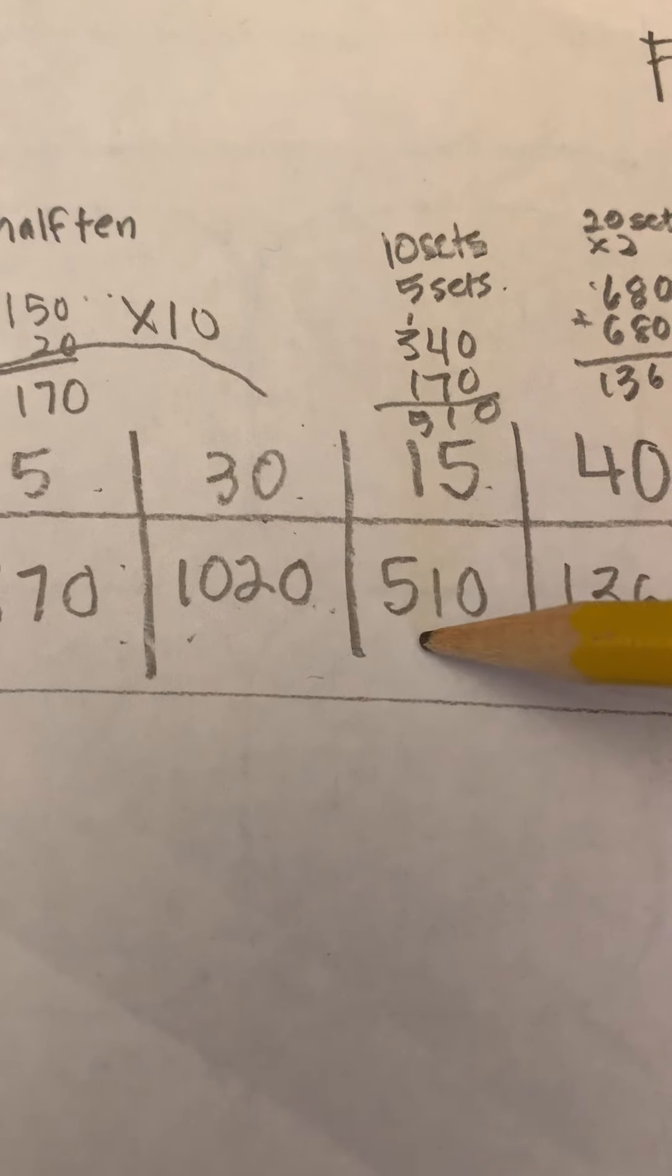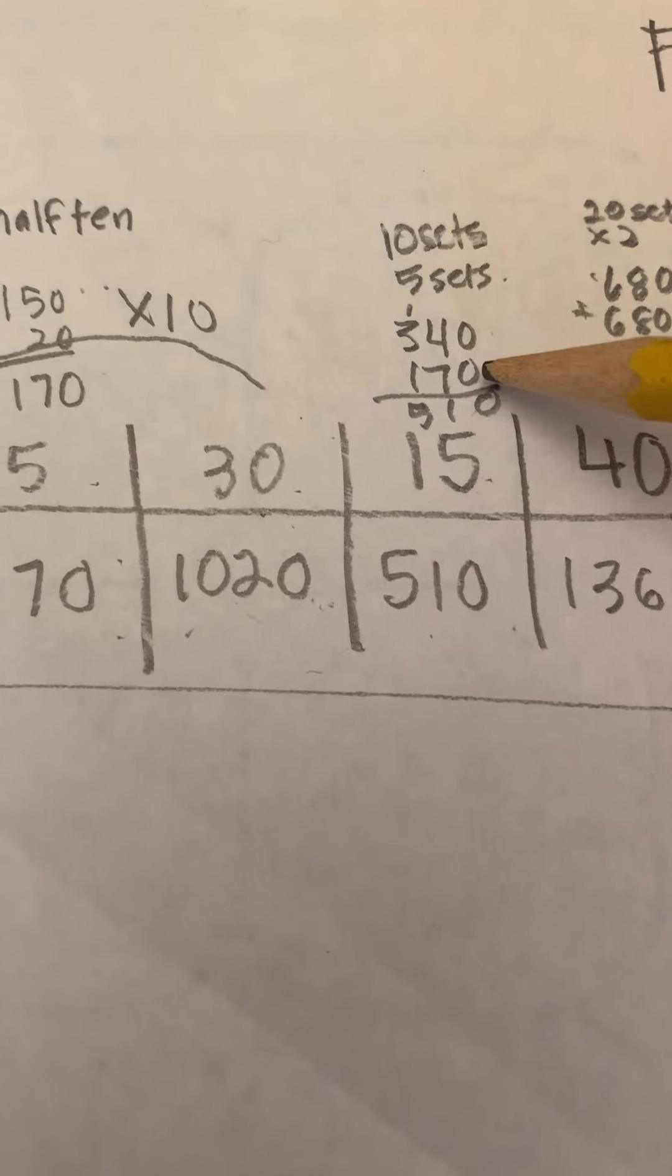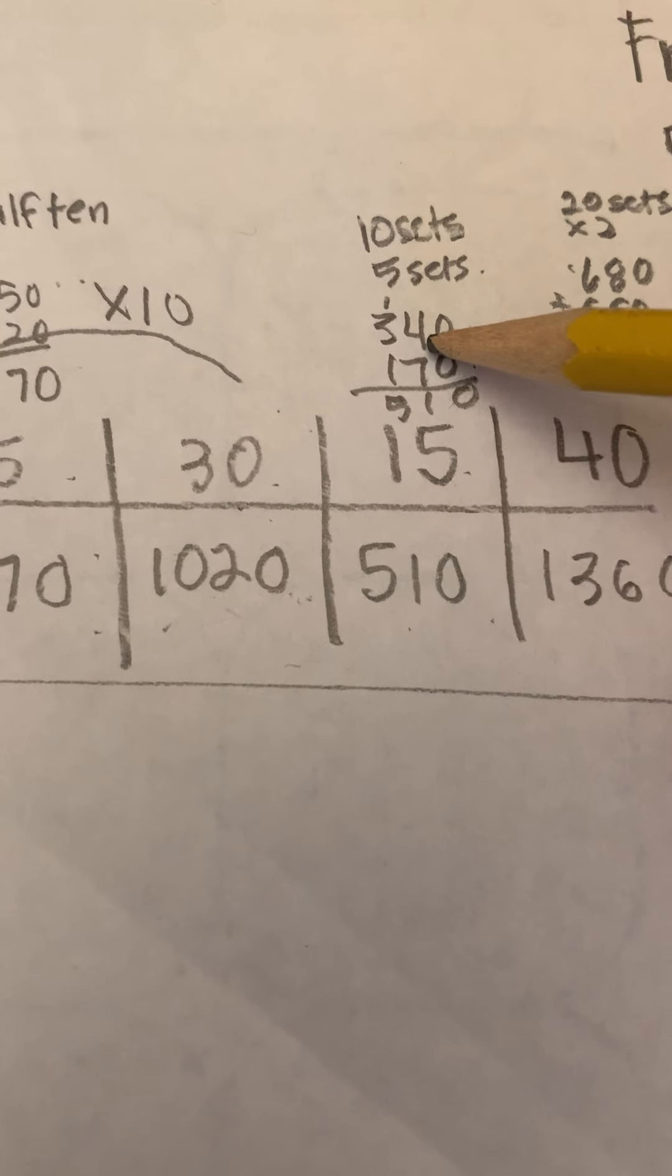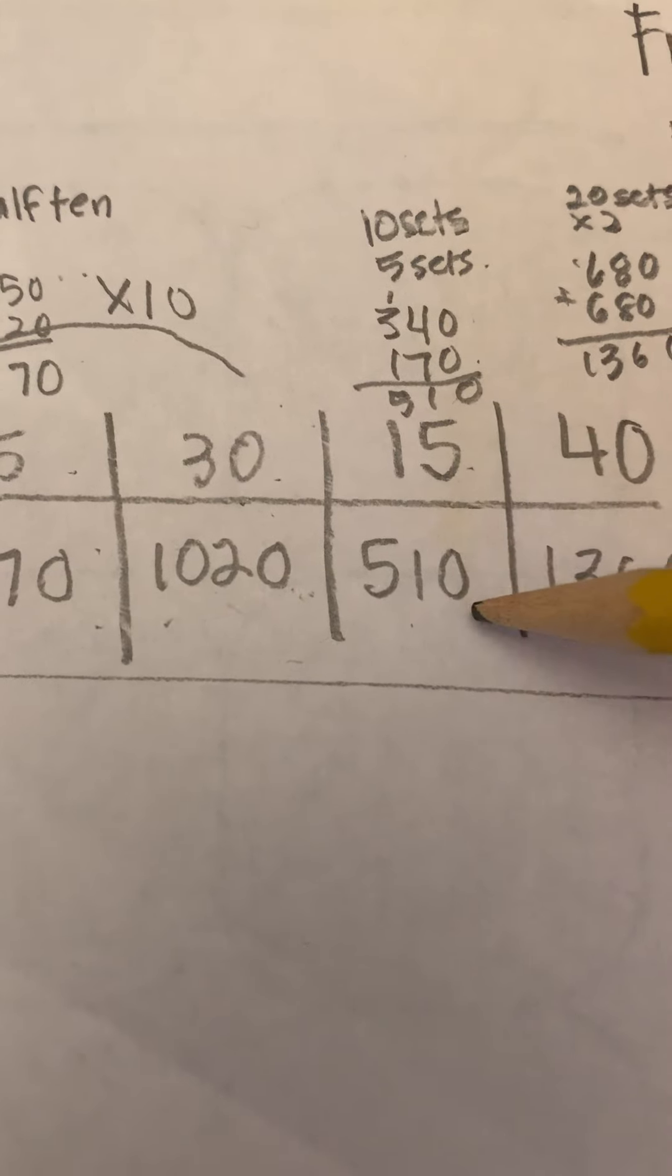Half of 1,000 is 500, half of 20 is 10. Or I could have done 10 sets plus 5 sets, 0, 0, 0, 7 and 4 is 11, carry the 100, 3, 4, 5, 5, 100, 10.